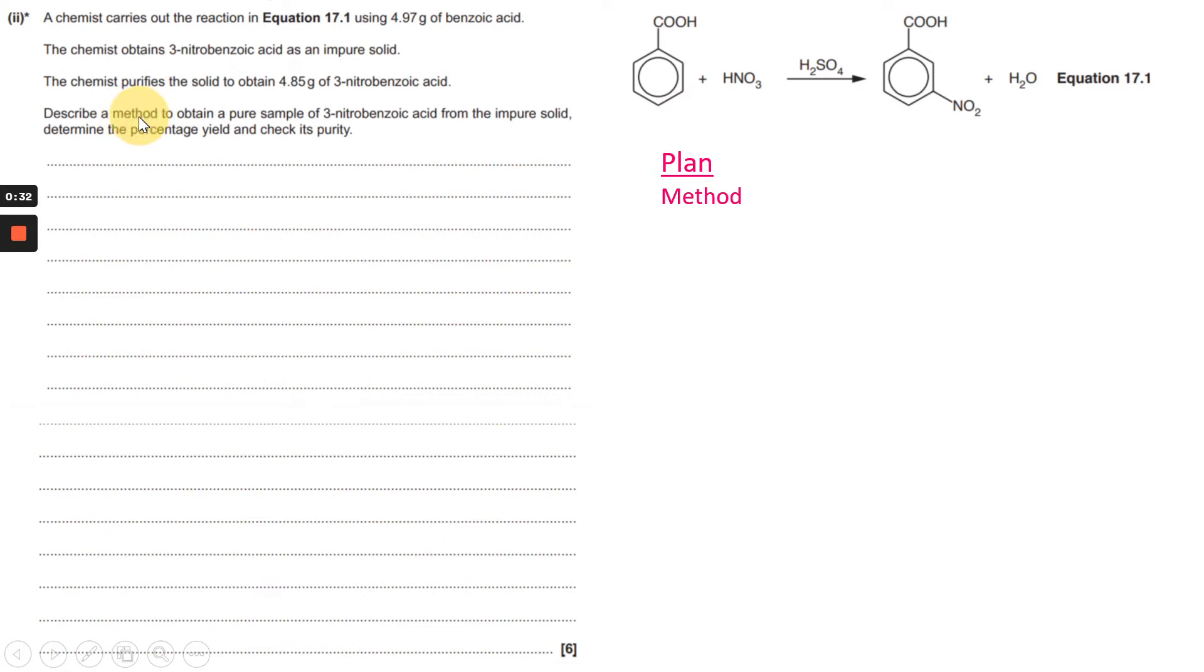You can see it describes a method or asks you to describe your method to obtain a pure sample of three nitrobenzoic acid, which is this compound here from the impure solid, determine the percentage yield and check its purity.